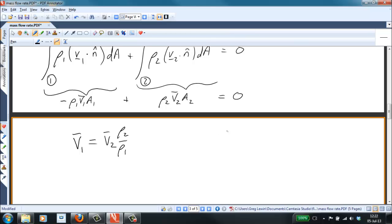We know that from the ideal gas law that rho is equal to P over RT. And so this becomes the average velocity at section two times P two over RT two divided by P one over RT one. Canceling out the R's, we just end up with V two bar times T one over T two times P two over P one, where I've taken the temperature one here up to the top.